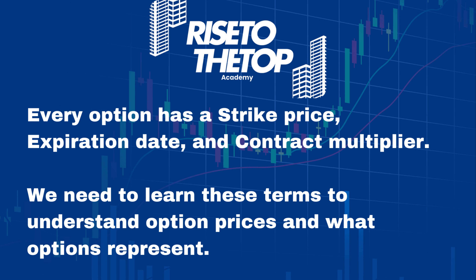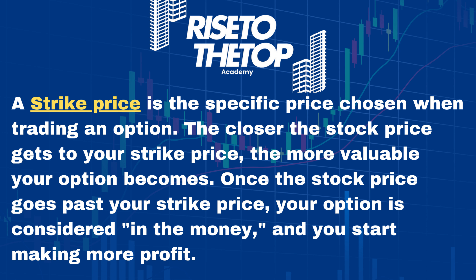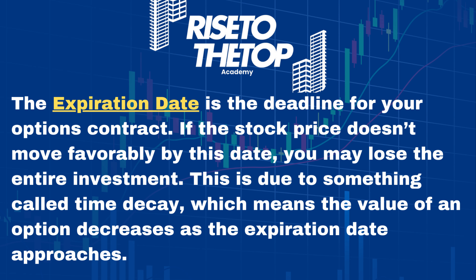Every option has a strike price, expiration date, and contract multiplier. The strike price is the specific price chosen when trading an option. The closer the stock price gets to your strike price, the more valuable your option becomes. Once the stock price goes past your strike price, your option is considered 'in the money' and you start to make more profit. The strike price is you telling the market this company is going to go past this price by a certain date.